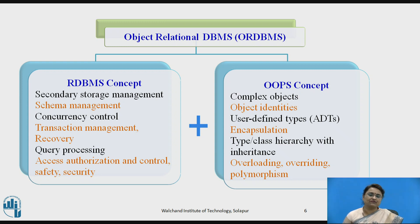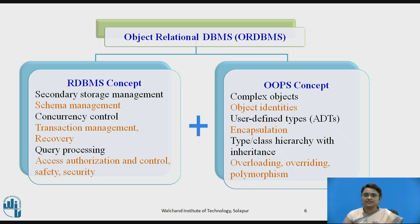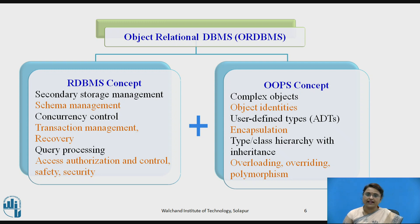On the left-hand side of the diagram, those are the capabilities of the normal RDBMS system. On the object-oriented OOP side, it provides complex objects — more complex data types like classes, objects, object identifiers, and user-defined types. We can define our own types, apply encapsulation, type and class hierarchies, inheritance, overloading, overriding, and polymorphism. All these combined form an object-relational database system.